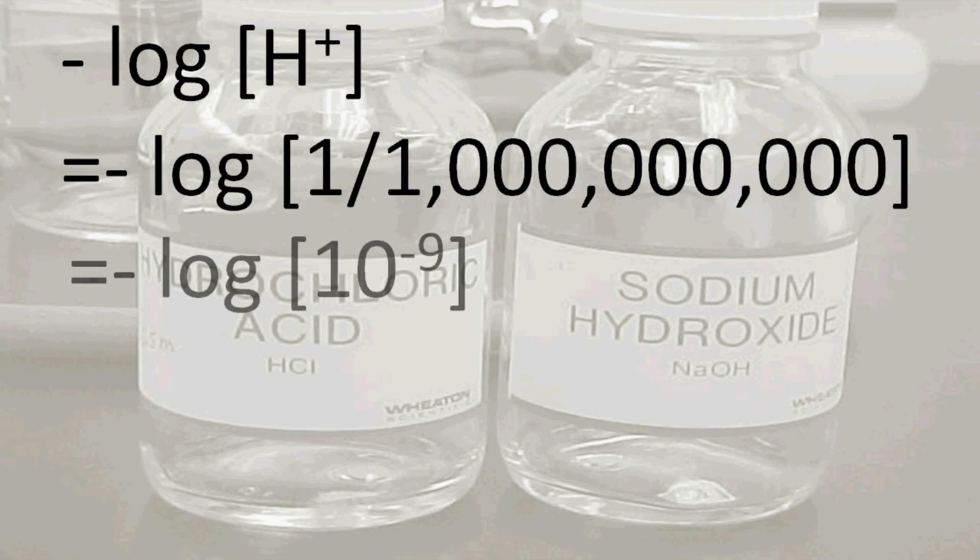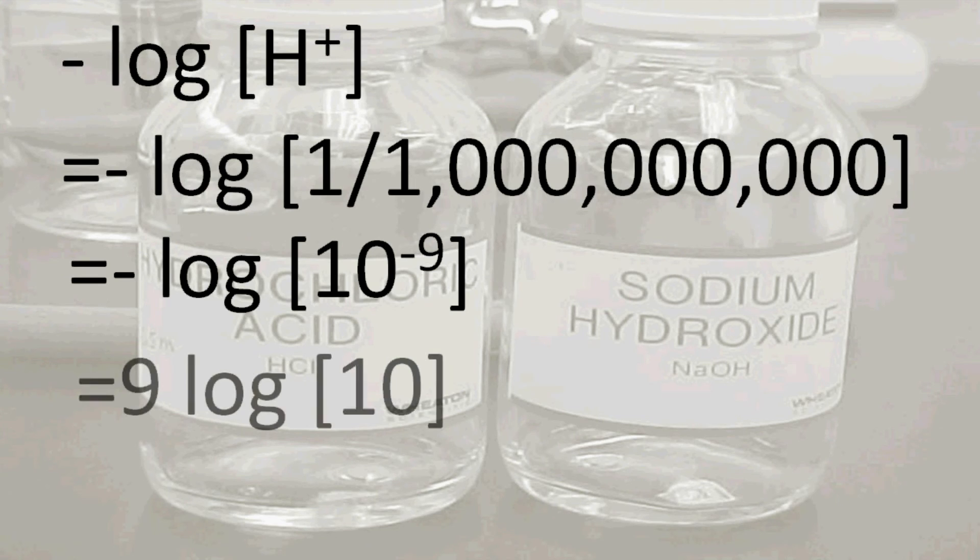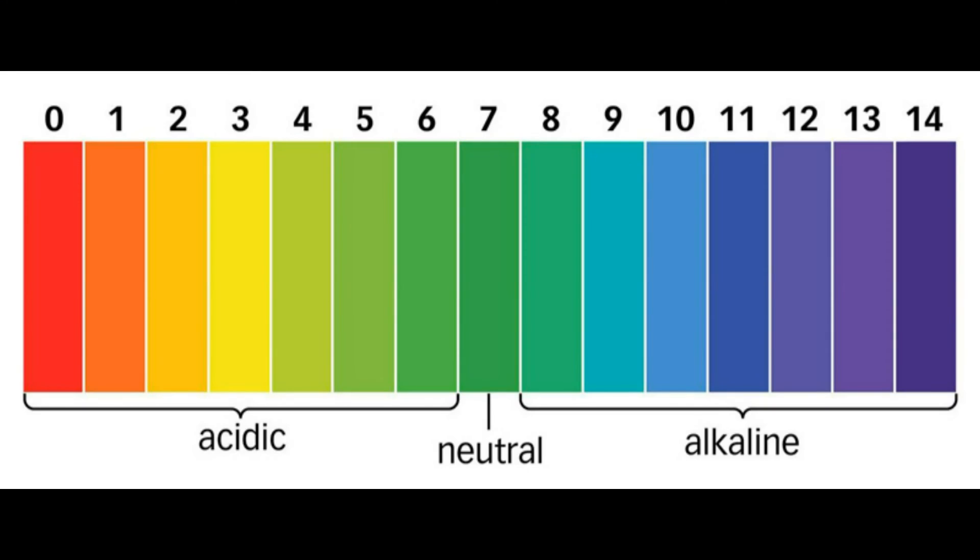Say 1 in 1 billion. 1 billion means 10 to the power 9, so 1 by 1 billion means 10 to the power minus 9. This minus 9 comes here, minus and minus is equal to plus, so plus 9 log 10. Log 10 is equal to 1, so pH is 9. So when we add alkali or base, concentration of hydrogen decreases and pH increases.